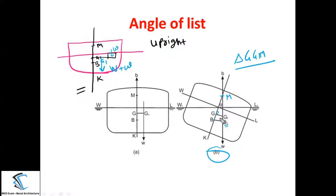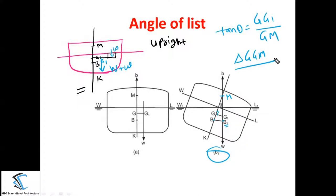I want to calculate theta, which is the angle of list. The formula is: tan θ = GG1 divided by GM. So if you know GG1 and you know GM, you can easily calculate the value of theta.